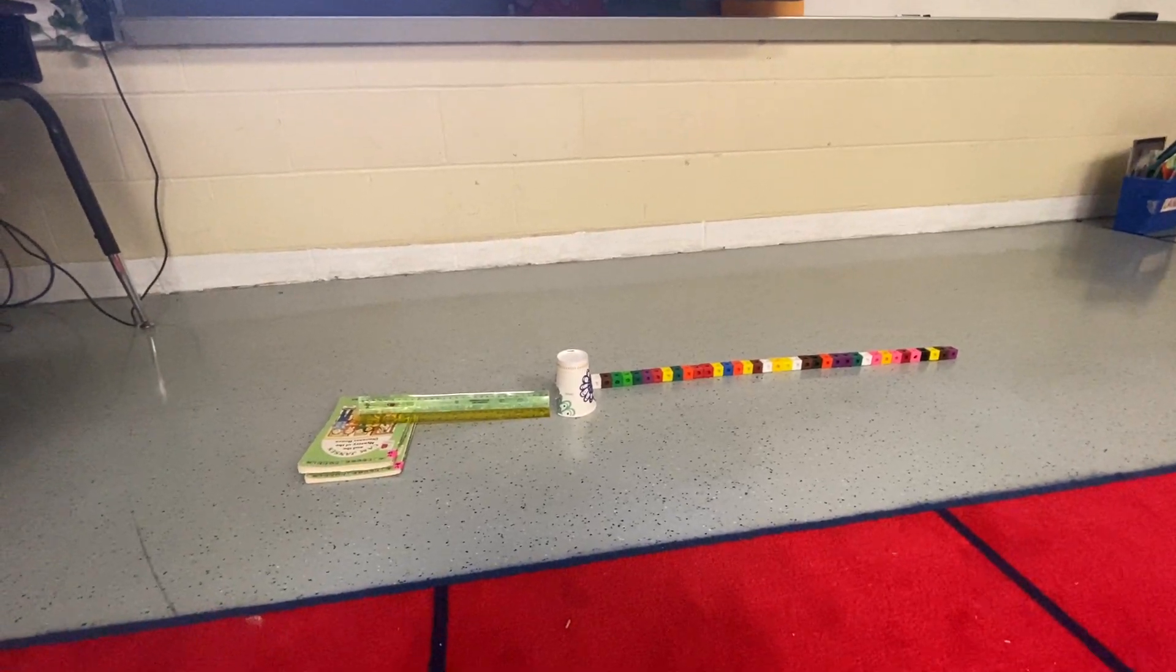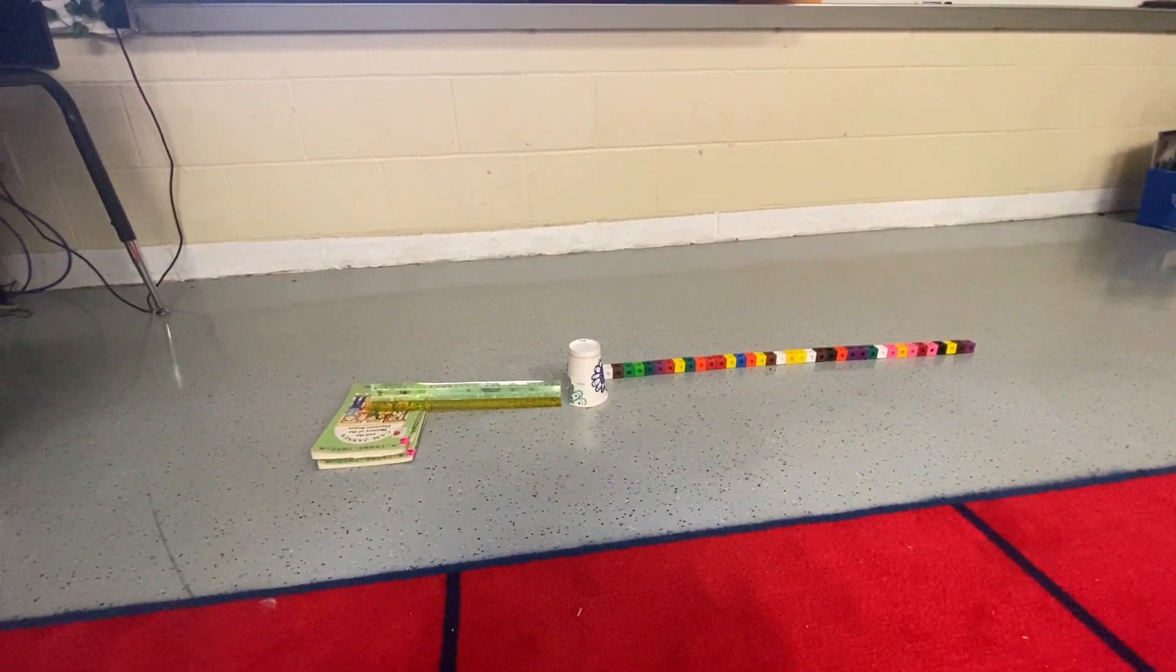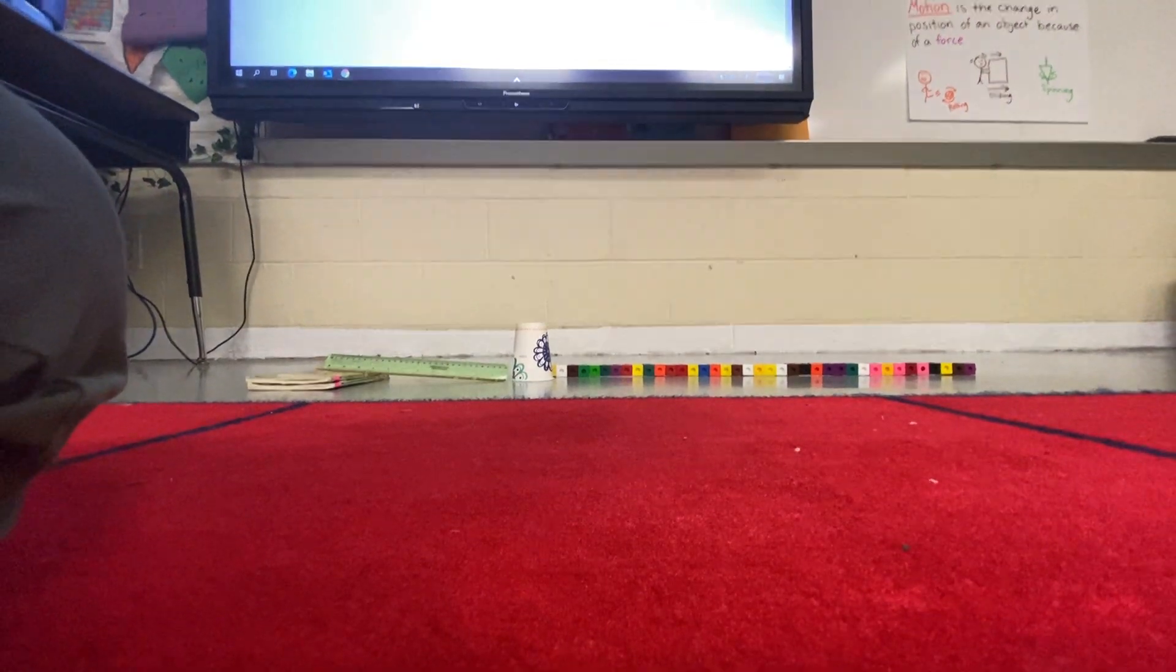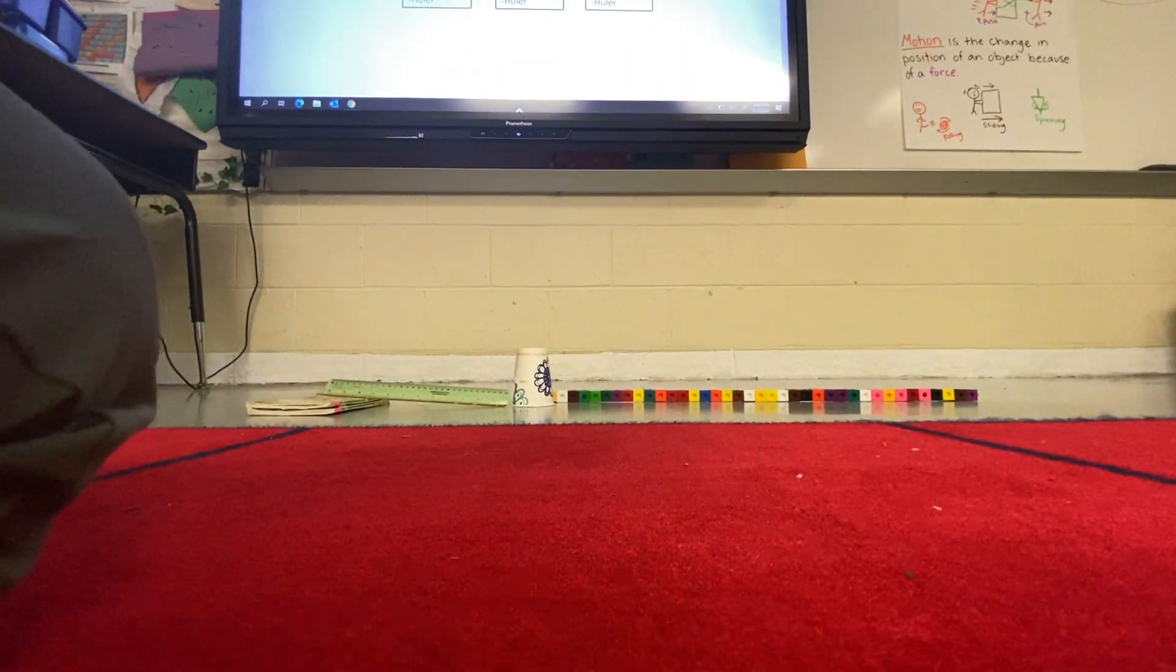We're now on ramp number two, using the two chapter books, the ruler and the cup, and connecting cubes again. So let's do the same thing and roll the ball to see how far it goes, and then use the connecting cubes to measure.